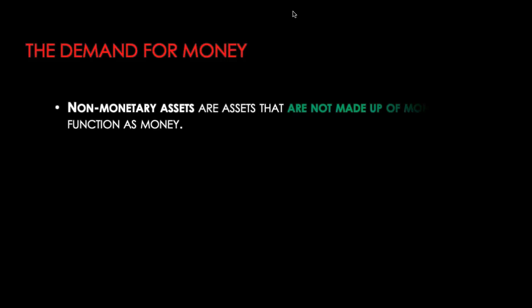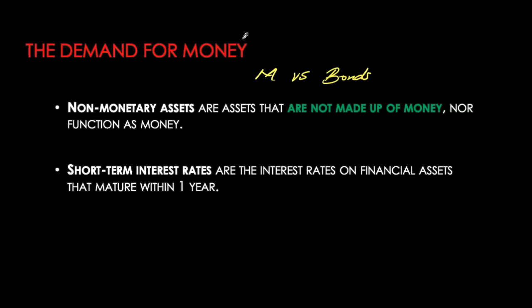Let's look at money demand first. To understand the demand for money balances, we compare money to an alternative asset. That alternative asset could be any non-monetary asset — for simplicity, we'll assume them to be bonds. Bonds are never part of money because the transaction cost of converting them into cash or checkable deposits is too high. So we have a choice between two types of assets.